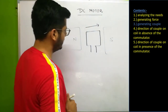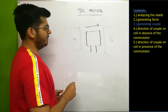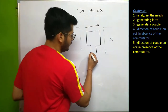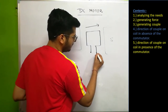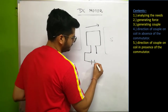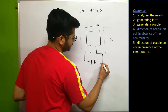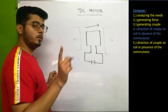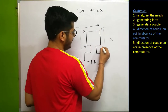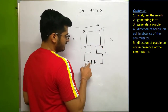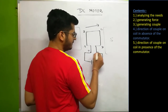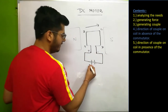Now, to utilize the magnetic effect of electric current, we need to supply current to the coil. The first arrangement we consider is permanently connecting this coil with an external power supply. These are the coil ends A, B, C, D. End A is permanently connected with the positive terminal and end D is permanently connected with the negative terminal of the battery.